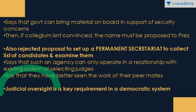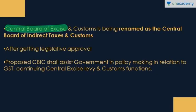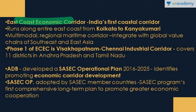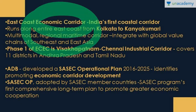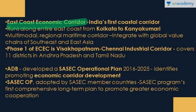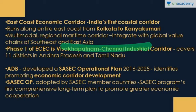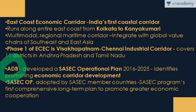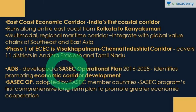Under economics, the Central Board of Excise and Customs will soon be renamed the Central Board of Indirect Taxes and Customs, in the context of the upcoming GST legislation. We also have the East Coast Economic Corridor — India's first coastal corridor — which will run from Kolkata to Kanyakumari. It is a multi-modal corridor; Phase 1 will cover Visakhapatnam to Chennai, covering Andhra Pradesh and Tamil Nadu. The Asian Development Bank is collaborating on this and is simultaneously helping with the SASEC Operational Plan, which aims to remove barriers related to transport and trade.